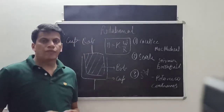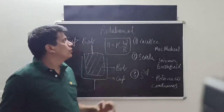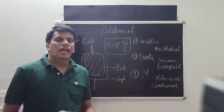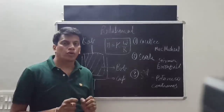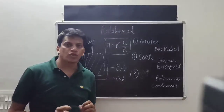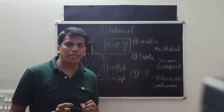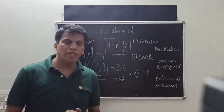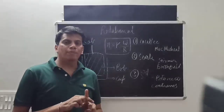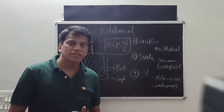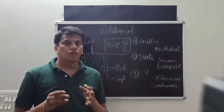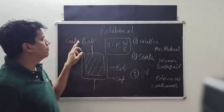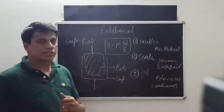Hi students, now we will discuss rotational viscometers. As already told, rotational viscometers are categorized into three types: cup and bob viscometers, cone and plate viscometers, and penetrometers. So first we start with cup and bob viscometers.